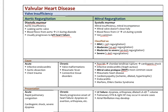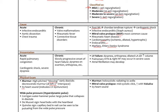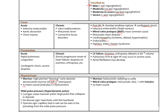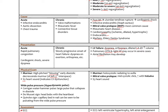Mitral valve prolapse, where the chordae tendineae get stretched and don't hold the mitral valve closed adequately, is the most common cause of mitral regurgitation, and is more common in females — possibly related to estrogen making the ligaments more lax. The majority of cases are mild and asymptomatic. Rheumatic heart disease, cardiomyopathies, endocarditis, and connective tissue disorders like Marfan's and Ehlers-Danlos also predispose people to mitral regurgitation. In severe cases, we get a dilated left atrium, pulmonary hypertension, right heart failure, and increased susceptibility to atrial fibrillation.